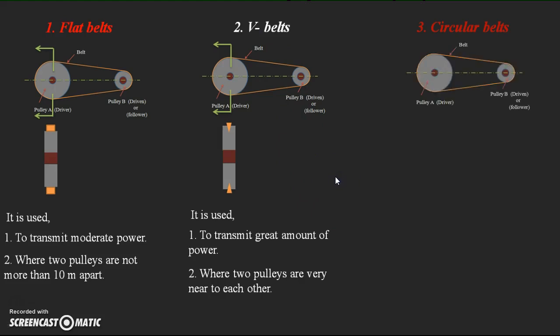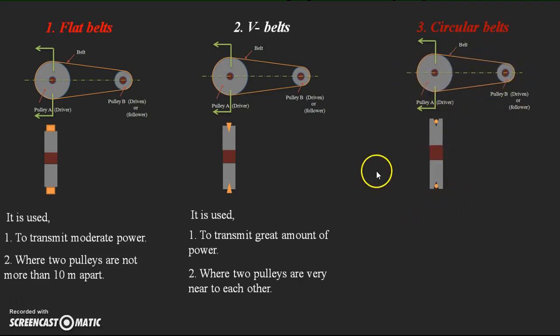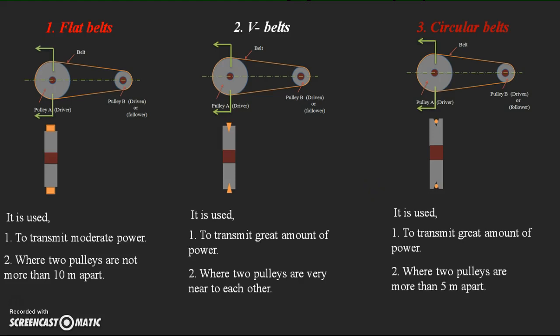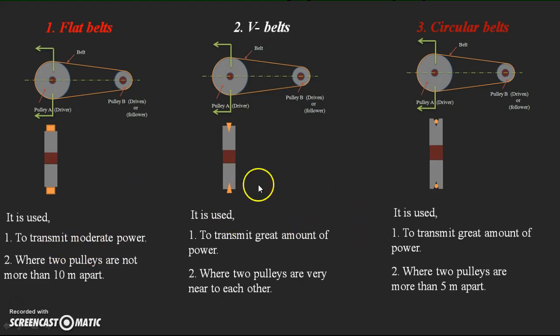For circular belts, a V groove is provided to the two pulleys, and a circular cross-section belt is mounted over the V groove. Circular belts are also used to transmit a greater amount of power, and they are used when the two pulleys are more than five meters apart — that is, when the two shafts are at a larger distance from each other. Based on the different power and distance conditions, the appropriate belt cross-section is selected.